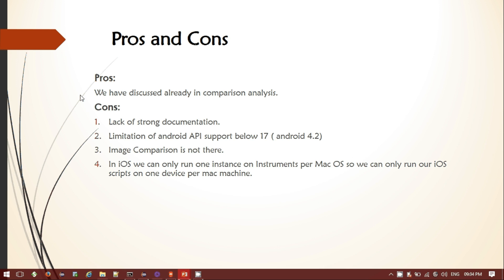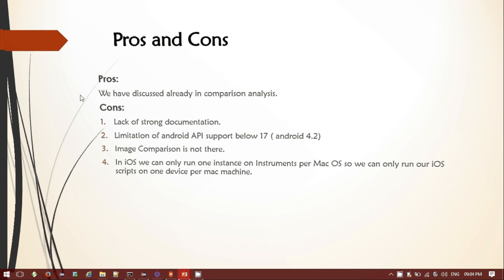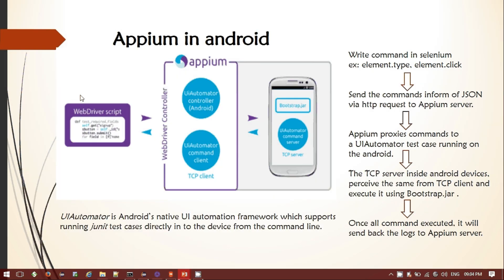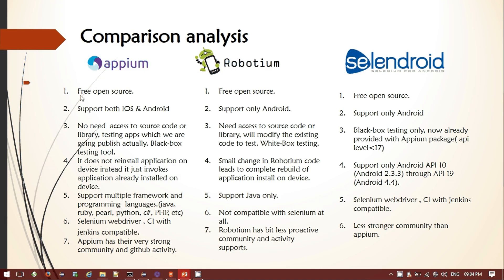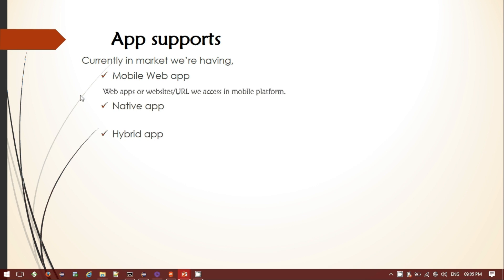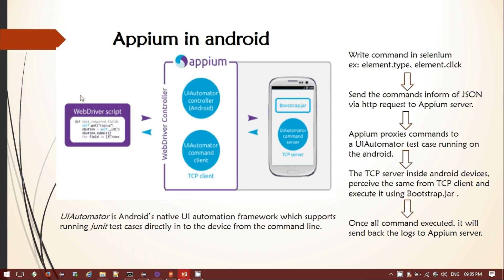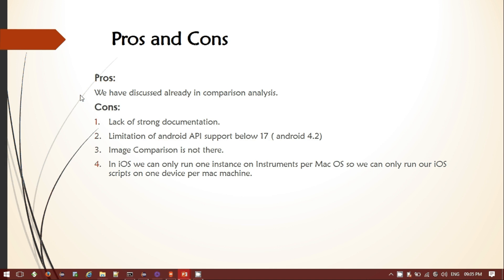Now let's look at the pros and cons of APM. The advantages we've discussed include: it's an open source tool, supports both platforms, supports multiple frameworks and Selenium WebDriver, is compatible with CI/Jenkins, has a very strong community and GitHub activity, doesn't need to reinstall applications, doesn't need an extra agent for mobile automation testing, and doesn't require access to source code — making it essentially a black box testing approach.